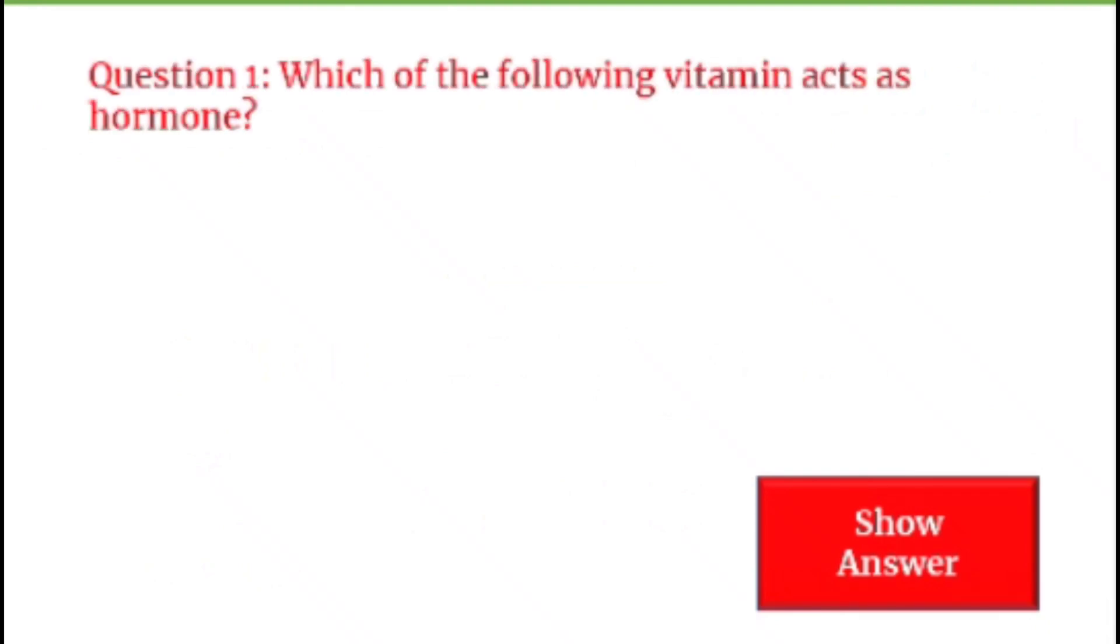Which of the following vitamins acts as a hormone? A. Vitamin E, B. Vitamin D, C. Vitamin C, D. Vitamin B. What will be the answer? You can see, Vitamin D acts as a hormone.